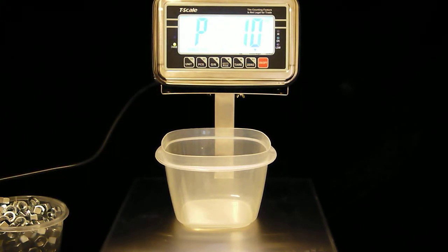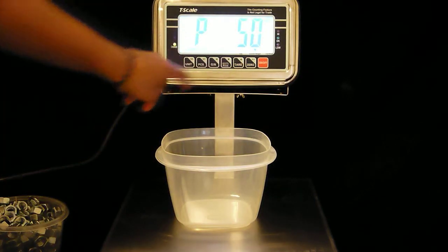P10 is going to show up on the display. We're going to start off using 50 pieces, so we're going to press the tare key until we see P50.